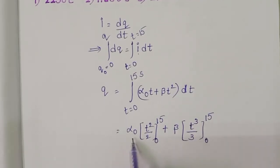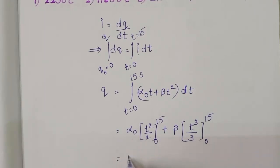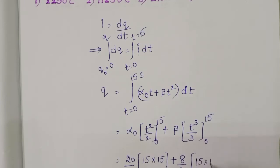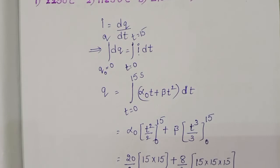We know α₀ and β values. The given α₀ value is 20 by 2 into, in place of t substitute 15, so 15 into 15. Plus β is 8, 8 by 3 into, in place of t cubed, 15 into 15 into 15. Now simplify this.